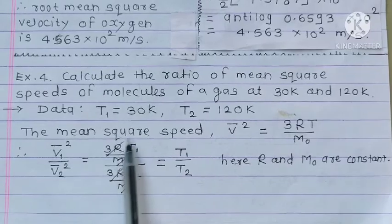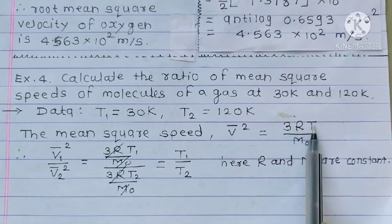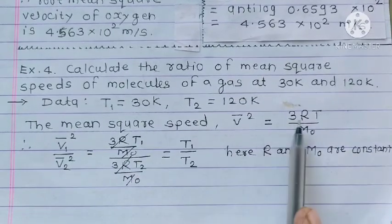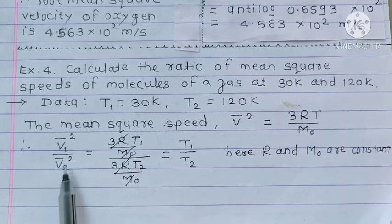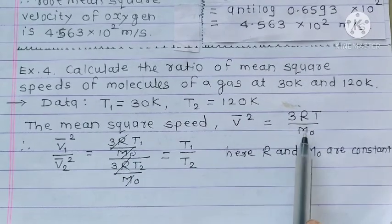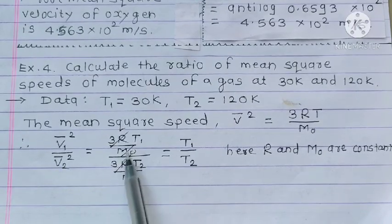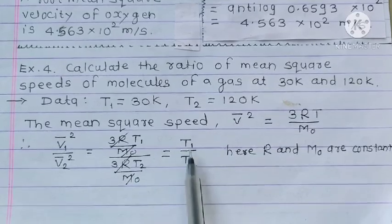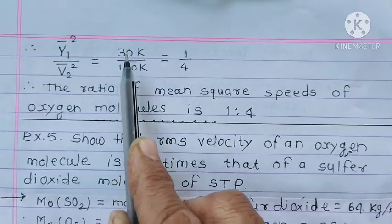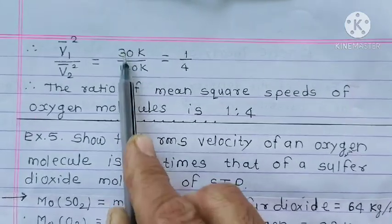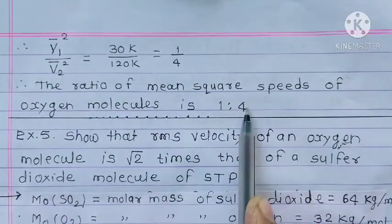The mean square velocity V square is equal to 3RT upon M0. So V1 square is 3RT1 upon M0, V2 square is 3RT2 upon M0. R and M0 are constant, so V1 square upon V2 square is equal to T1 to 30K and T2 to 120K. So the ratio of mean square is 1 is to 4.